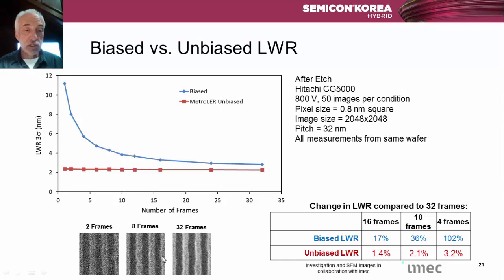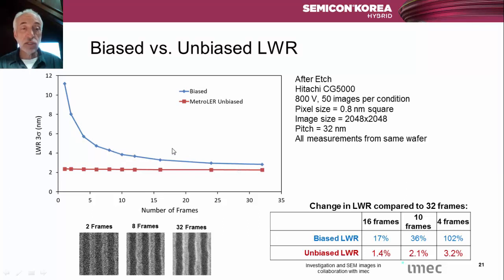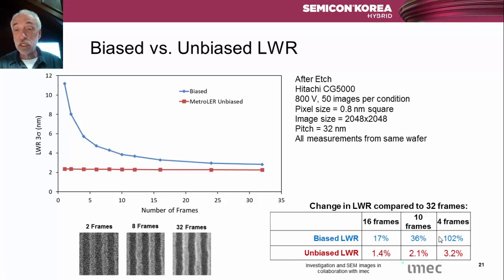Here's a straightforward experiment anyone can do: measure the same patterns with different frames of averaging — two frames, eight frames, 32 frames. The wafer didn't change, but looking at the biased LWR, there's a huge variation as the number of averaging frames changes. Comparing four frames to 16 frames, there's a 100% — factor of two — difference in the measured answer. But if you measure and subtract out the noise, the unbiased LWR varies by only a few percent. This is work in collaboration with IMEC.